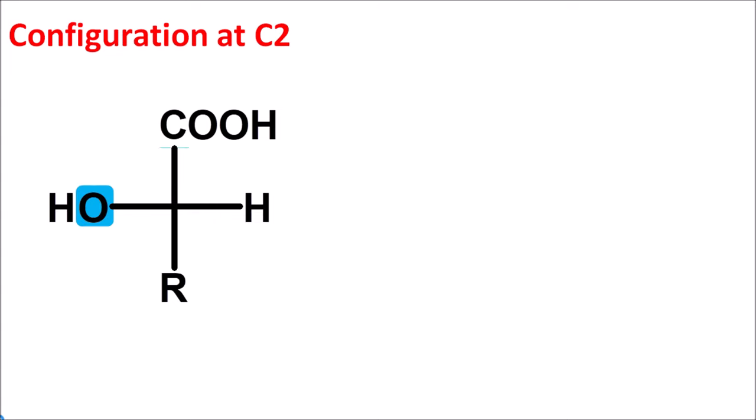Now at C2, let us identify what are the groups attached to this chiral carbon. One is oxygen, second one is carbon, third one is hydrogen, and fourth one is the R group which is attached by carbon. According to the sequence rules, we have to give preference to the atom with the highest atomic number. Since oxygen has the highest atomic number, oxygen should be given first preference, and since hydrogen has the least atomic number, it is given the fourth preference. Now we have to rank the COOH and R group, since carboxylic acid as well as R group are attached by the same atom, that is carbon. Then we have to give the priority order based on the further atoms attached to these carbons.